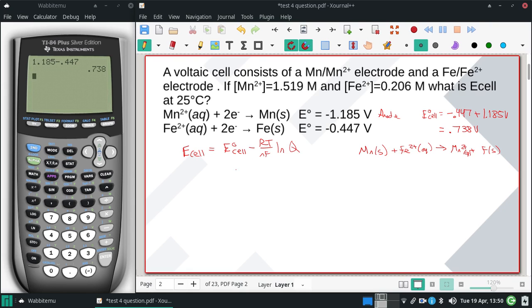That helps us get Q. E_cell = E°_cell = 0.738 V minus... R = 8.314 J/(mol·K) and temperature = 25°C = 298 K.